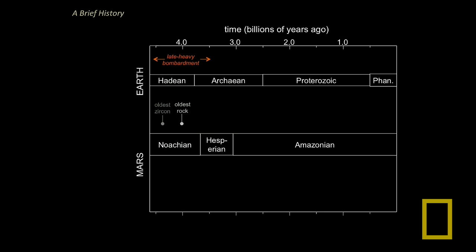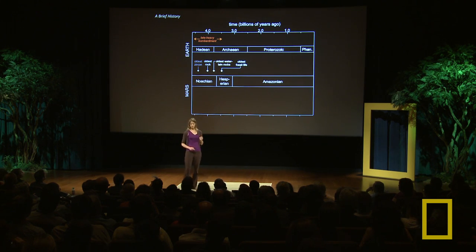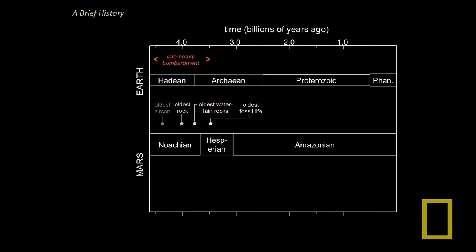Our first rocks on Earth are not from the very beginning, but we have the oldest mineral — a zircon — and the oldest rock dating from about four billion years ago, about 500 million years into our planet's history. Then, coming online at about 3.8 billion years ago, we have the first evidence of a rock, the Isua Greenstone Belt, that looks like it's been formed and laid down in liquid water. Shortly after that, we have evidence for the oldest fossil life: 3.5 billion years ago, little small microbes, little fossils preserved in the rocks in Western Australia. One billion years after the start of our planet, we had life.